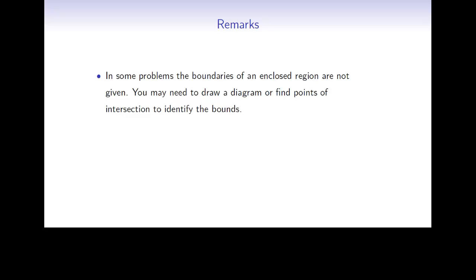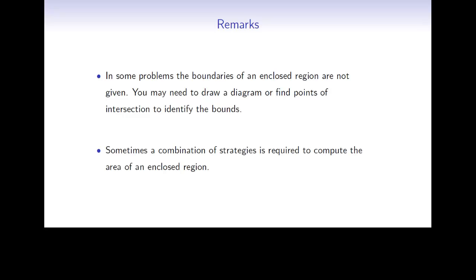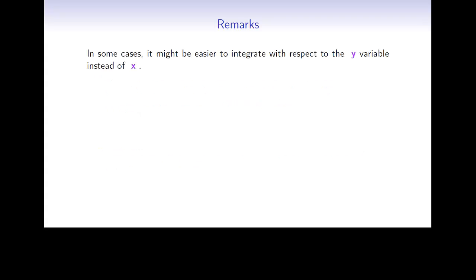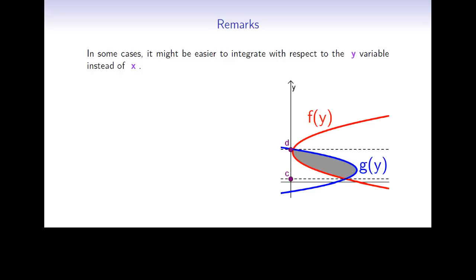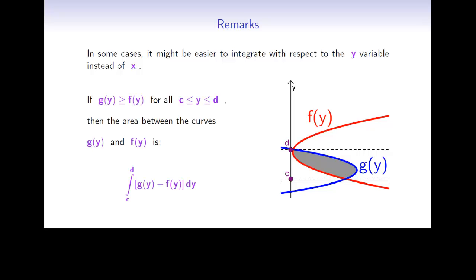In some problems, the boundaries of an enclosed region are not given — you may need to draw a diagram or find points of intersection to identify the bounds. Sometimes, a combination of strategies is required to compute the area of an enclosed region. In some cases, it might be easier to integrate with respect to the y variable instead of x. Given two curves expressed as functions of y — x equals f(y) and x equals g(y) — if g(y) is greater than or equal to f(y) for all y between c and d, then the area between the curves is given by the integral from c to d of g(y) minus f(y) dy.